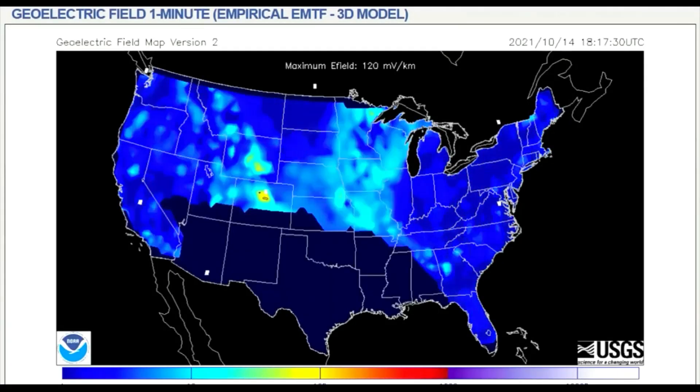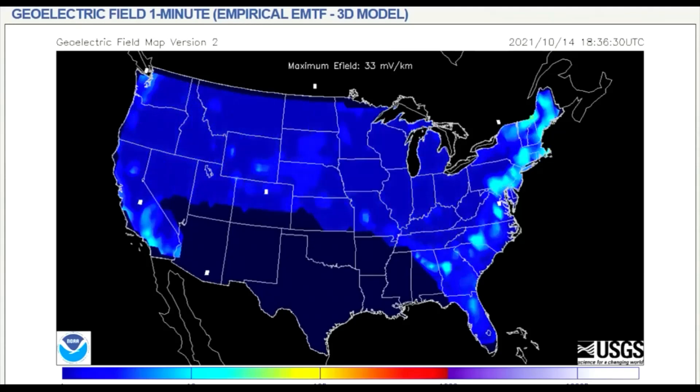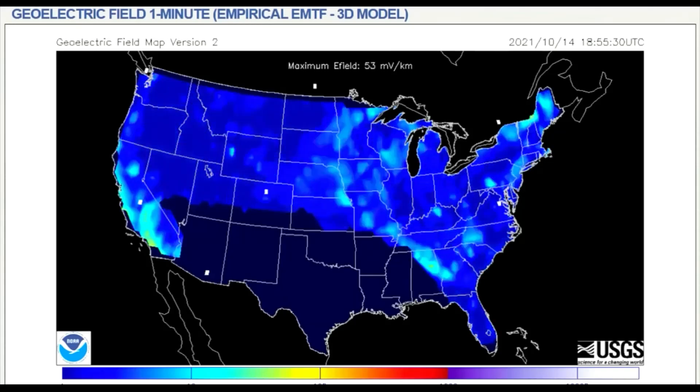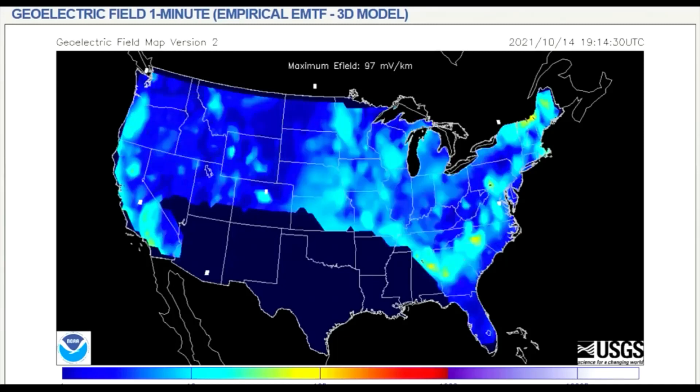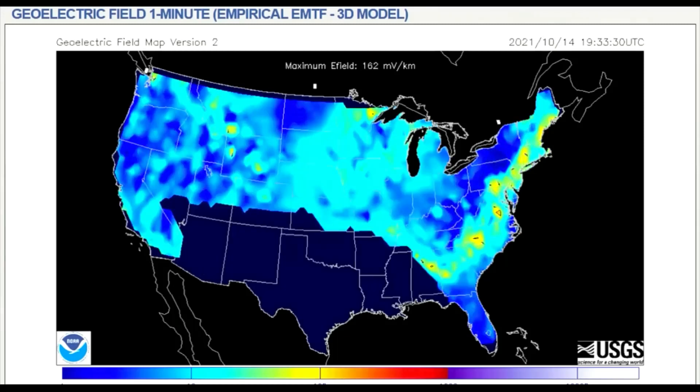This geoelectric field is a measure of the induction hazard to artificial conductors, such as electrical power lines, that results from geomagnetic activity, and can be used to estimate the amount of current induced by integrating along the conducting pathway.